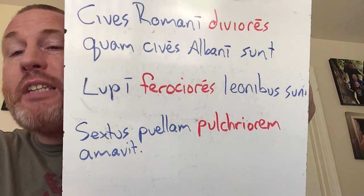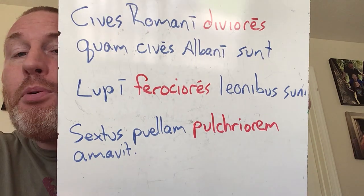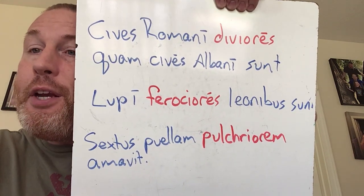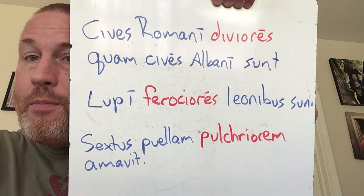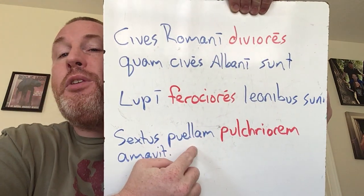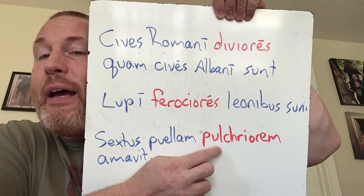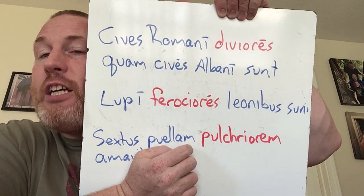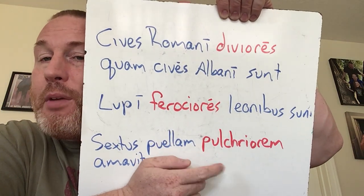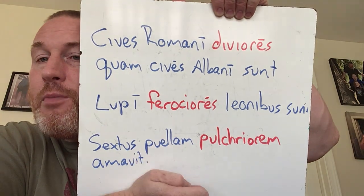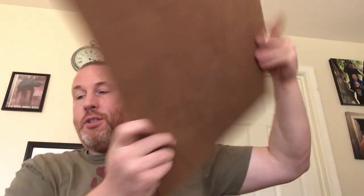And then the last one: Sextus puellam pulchriorem amavit — Sextus loved the prettier girl. The reason I'm doing this one is so that you can see that this is still an adjective, so it's still going to match number, case, and gender to whatever it's describing. So feminine, singular, accusative. That's how it works. So that is comparatives.